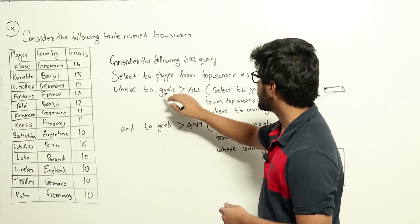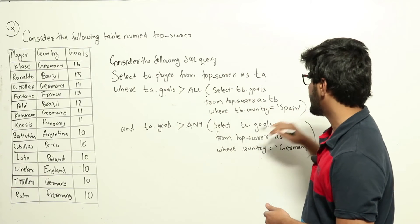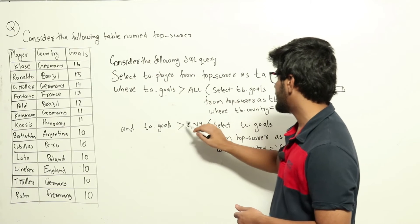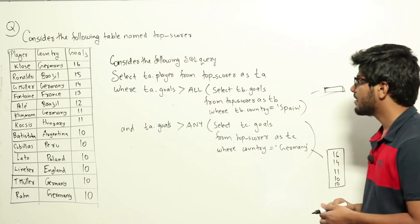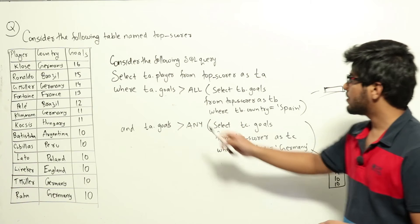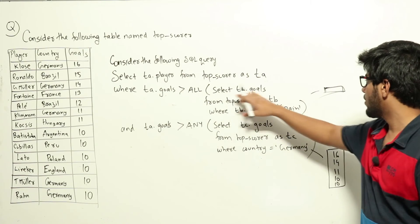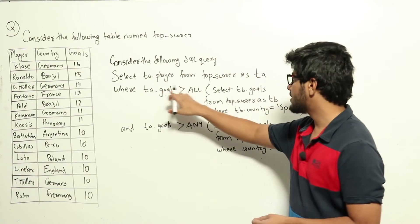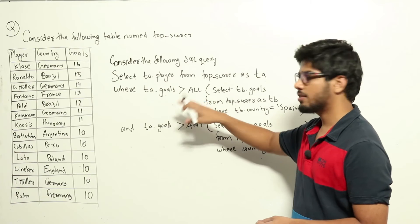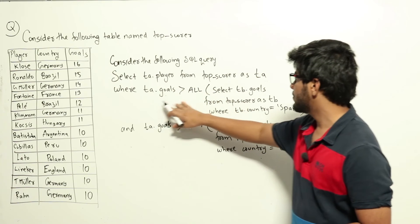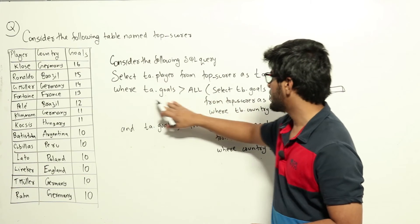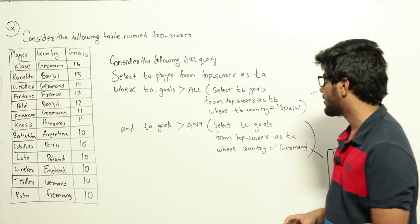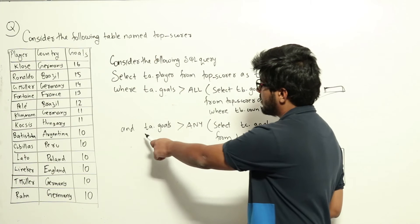With this info, let's look at the full query: SELECT ta.player FROM topscorer AS ta WHERE ta.goals > ALL (null set) AND ta.goals > ANY (the Germany set). Now, ta.goals > ALL of a null set is always true — greater than ALL will always be true for an empty set. So this condition will always return true for whatever tuples we select from topscorer.